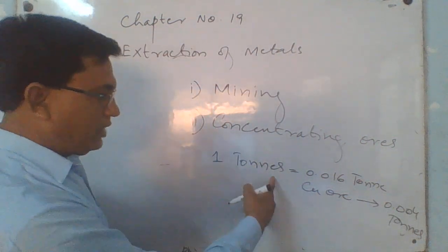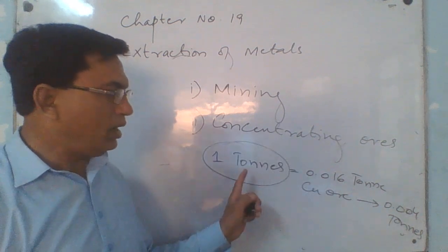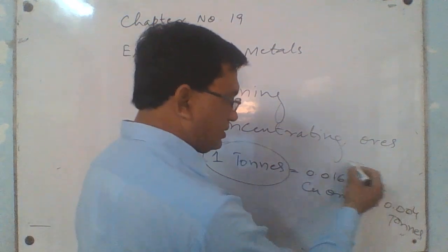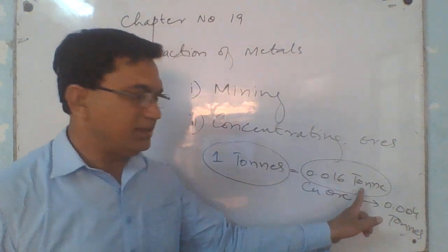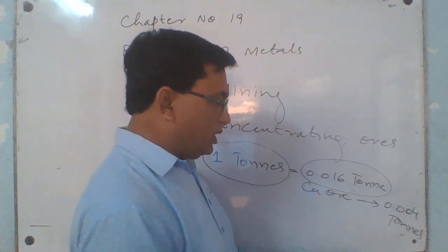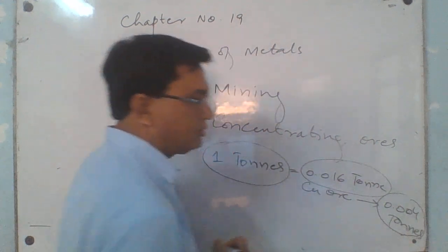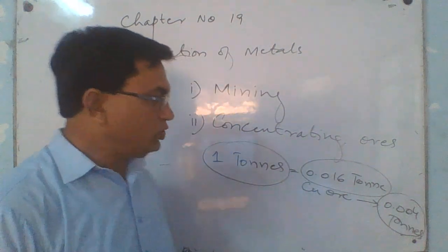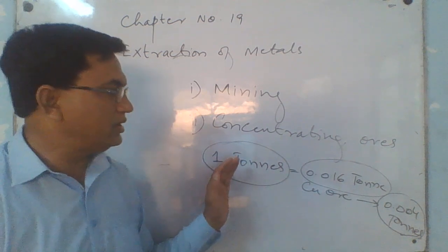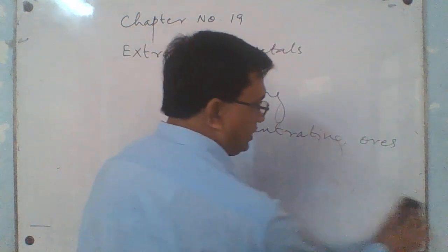You can compare all these values: 1 tonne is the mineral with all impurities, 0.016 tonne is the quantity when the ore is concentrated, and 0.004 tonne is the quantity of pure metal obtained. The rest of the substances are all impurities which are removed by certain methods.